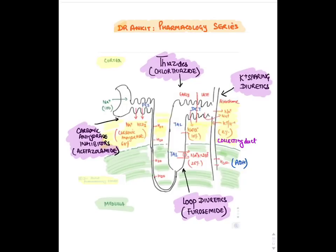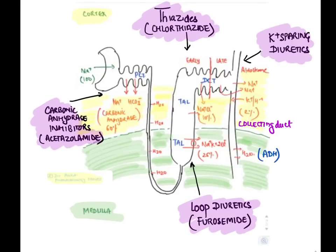Diuretics prevent the absorption of sodium in the kidney and cause loss of sodium as well as water into the urine. Suppose 100 molecules of sodium are filtered from the glomerulus — they go into the PCT (proximal convoluted tubule) and around 60% or two-thirds of the sodium gets reabsorbed back into the blood by an enzyme known as carbonic anhydrase. Sodium gets reabsorbed with negatively charged ions like bicarbonate. The first diuretic — carbonic anhydrase inhibitors — causes loss of sodium and bicarbonate in urine. The drug is acetazolamide.